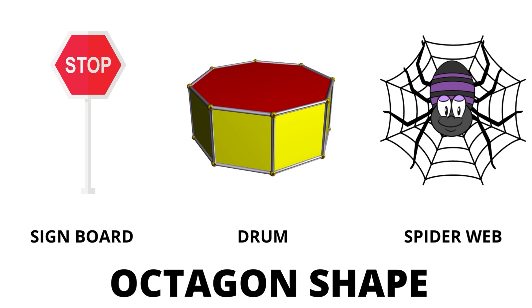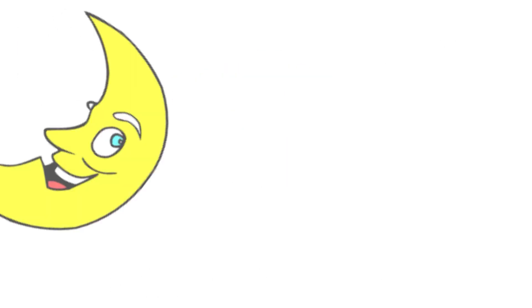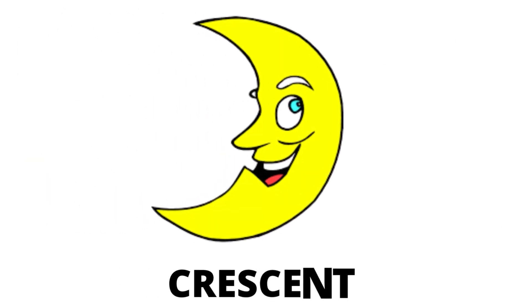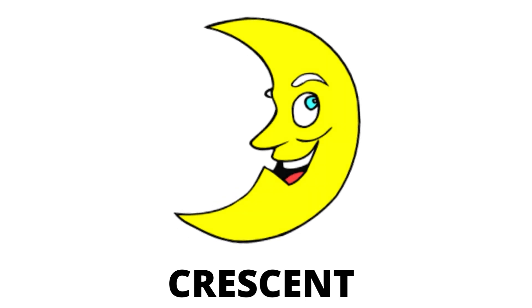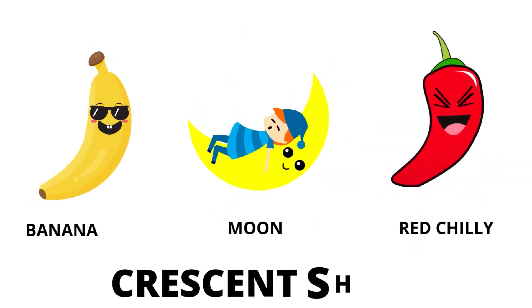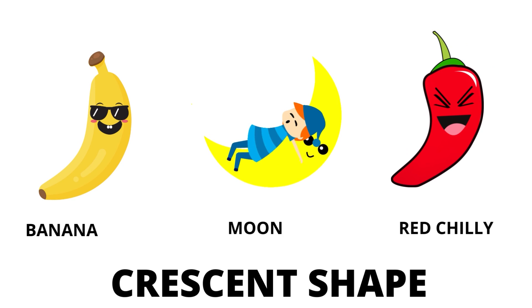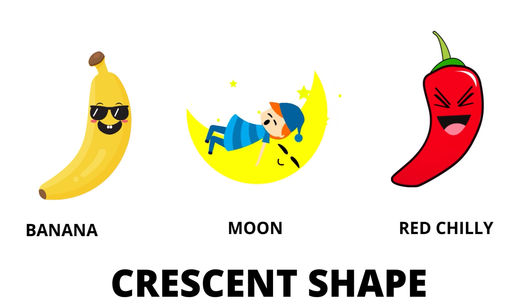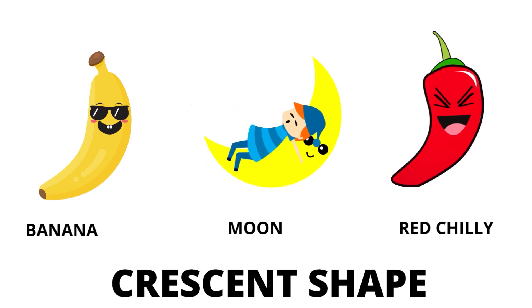Our next shape is crescent. Crescent is a semicircular form. The real life examples of crescent are banana, moon, and red chilli.